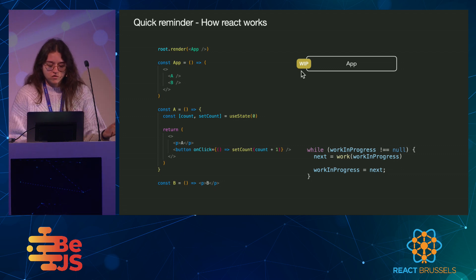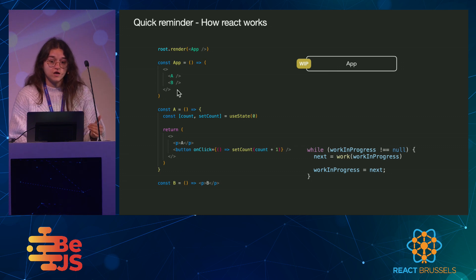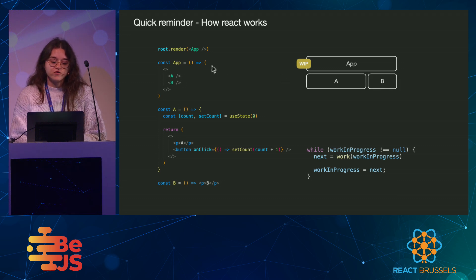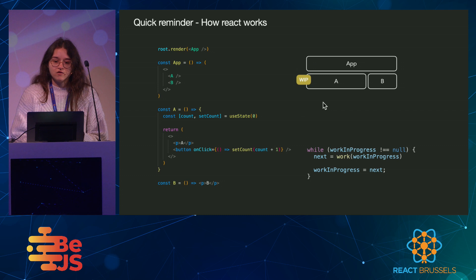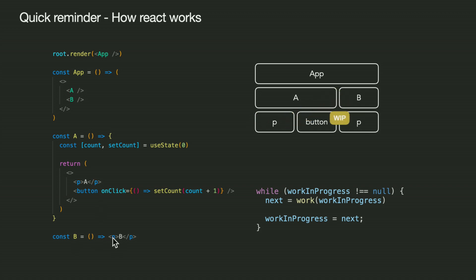Let's do this together. Here, work-in-progress is pointing towards the first fiber in our tree: App. We are going to perform some work over App — we are going to render this component, which means executing its function component. So we execute this function. Here, we instantiate these two components, A and B, with JSX syntax. So we add the A and B fibers, and we're done rendering App. So we can move on to the next fiber, which is A. React goes through this tree from top to bottom, so we are going to render A. Here, we instantiate the paragraph and the button, and so on. B instantiates its paragraph. And this is our tree.